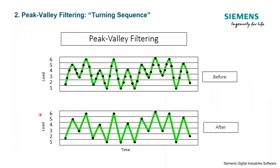The next step is peak valley filtering. The goal is to only keep data points which are reversals or direction changes in slope. Within a cycle, only the maximum and minimum values actually matter when calculating damage — the in-between points have no effect on our damage calculation, so we throw them out. We only keep the minimums and maximums. The result is sometimes called a turning point sequence.